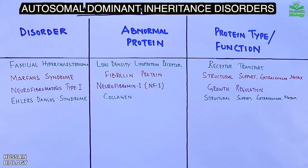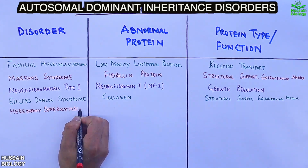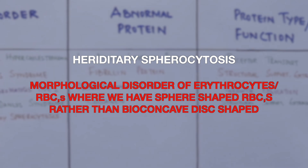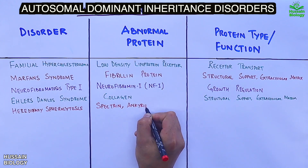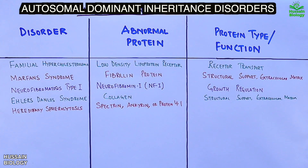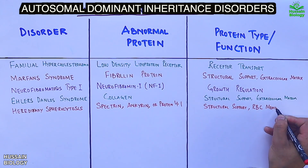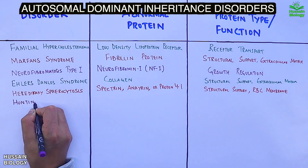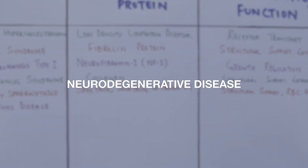Then we have hereditary spherocytosis, where erythrocytes are sphere-shaped rather than biconcave. This is due to abnormal proteins such as spectrin, ankyrin, or protein 4.1, whose normal functions are to maintain the shape of RBCs and provide structural support.